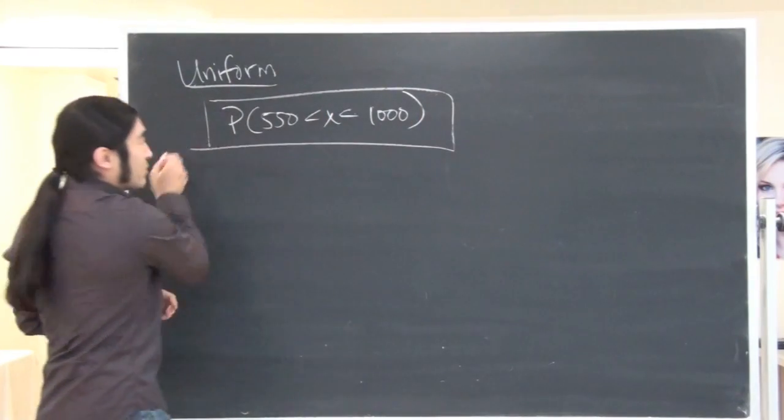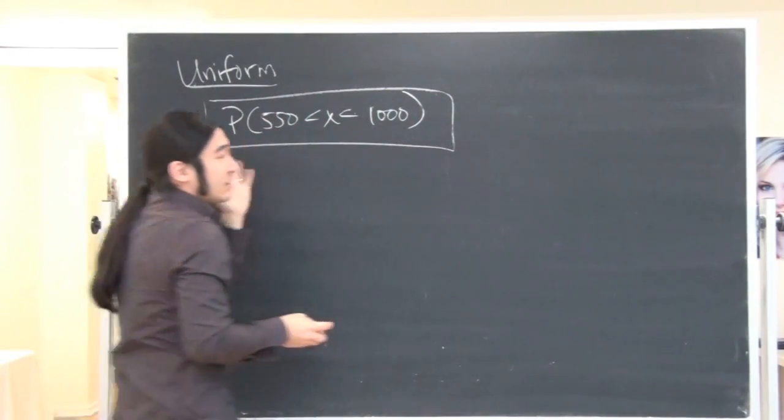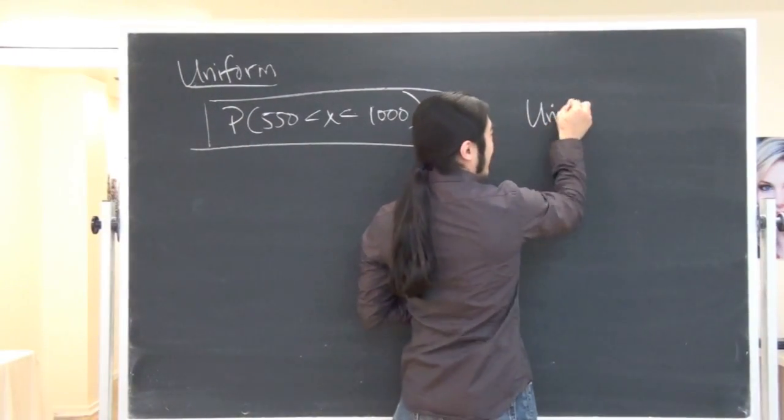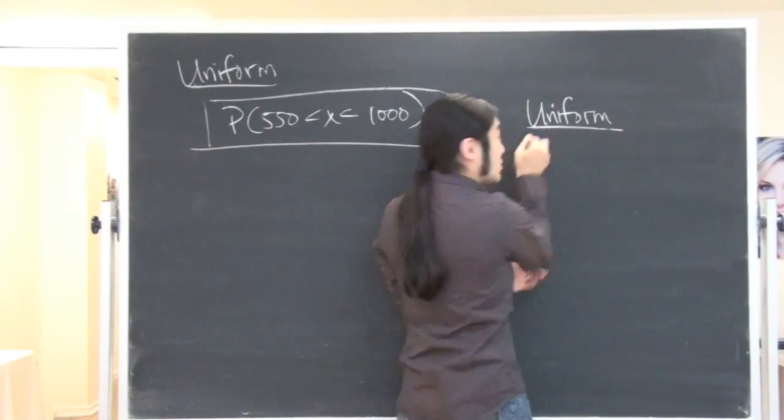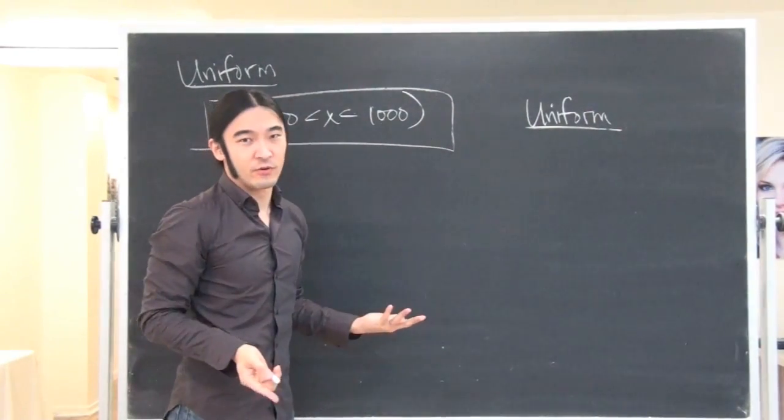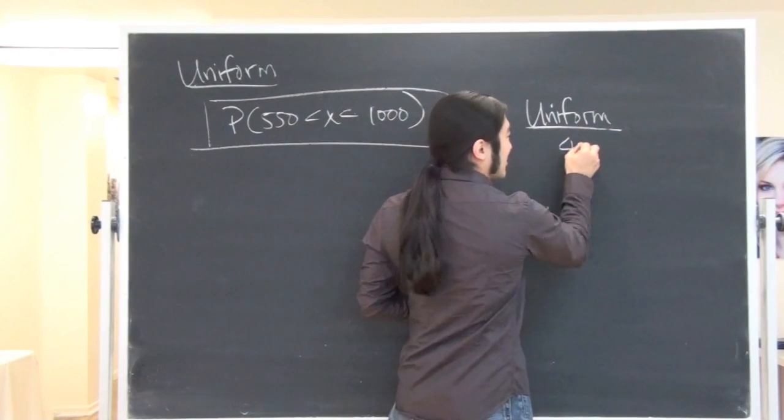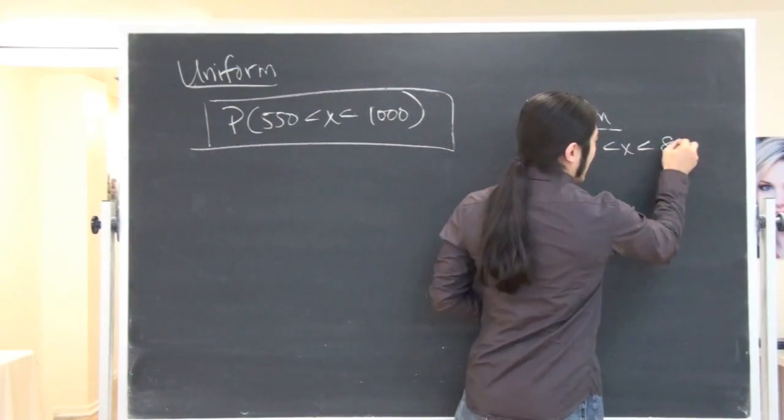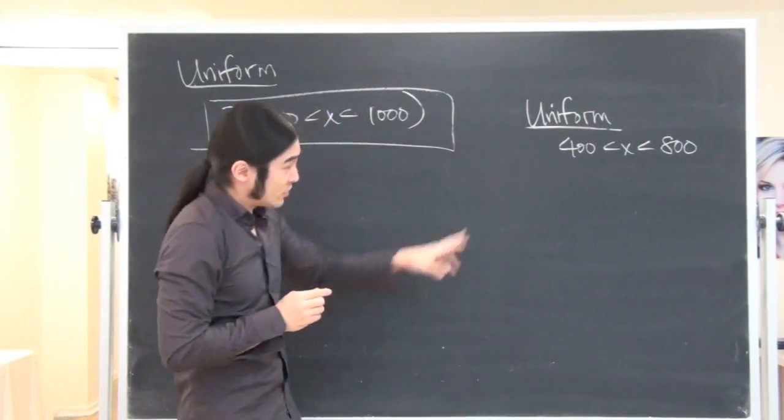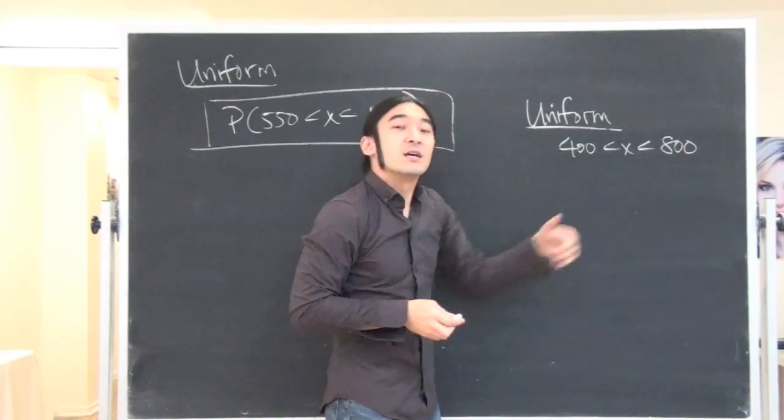And I think the setting of the problem is something about a ship or cargo or something like that. But it boils down to, what's the probability that this happens, given that the distribution you're dealing with is uniform. So, they got to tell you it's uniform. And the second thing is, you know that it's uniform on what range. So, in the problem, they told you it's uniform from 400 to 800.